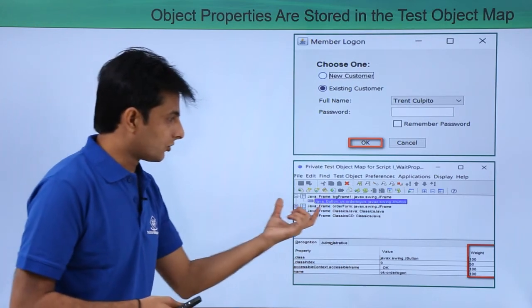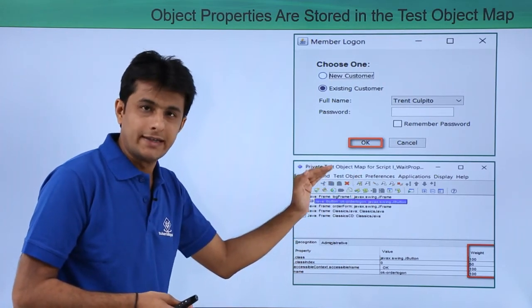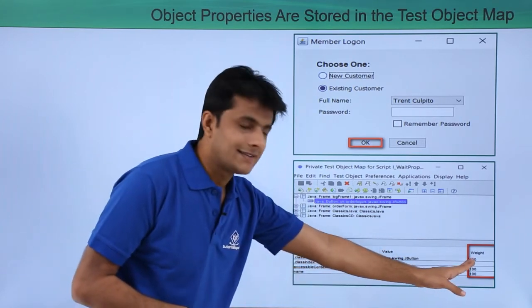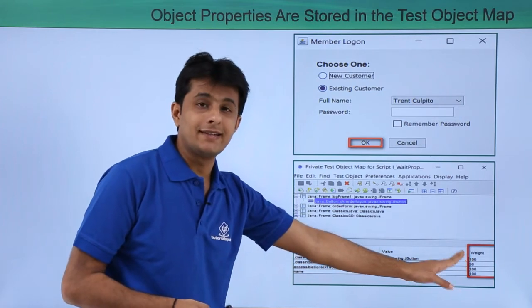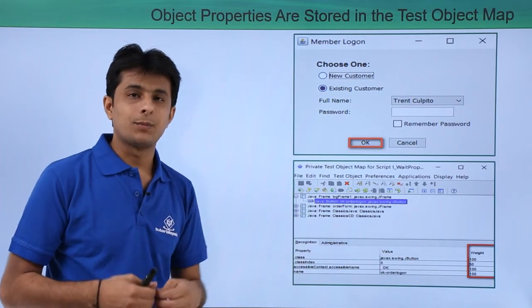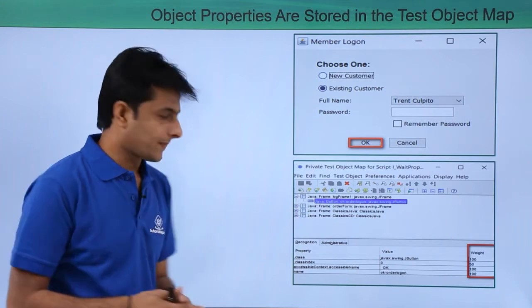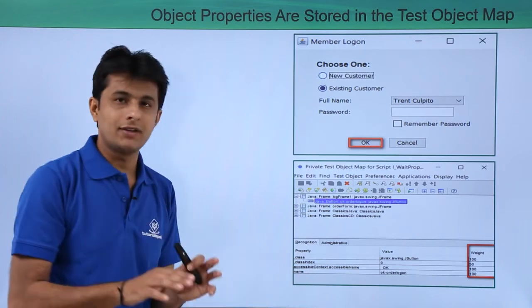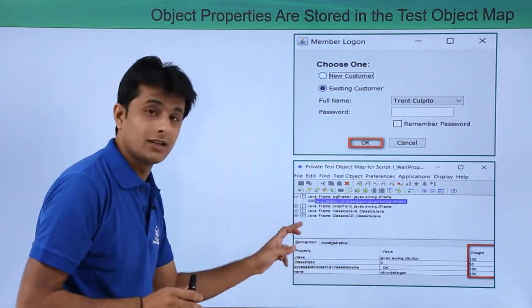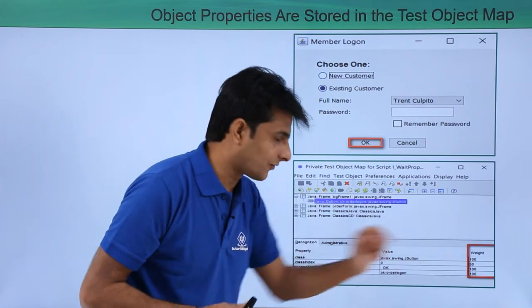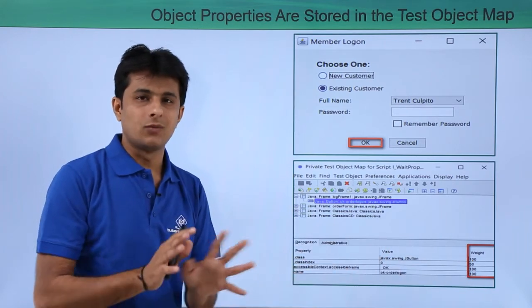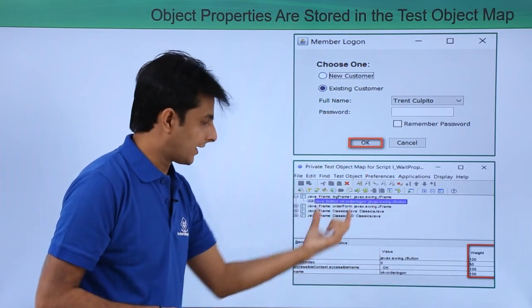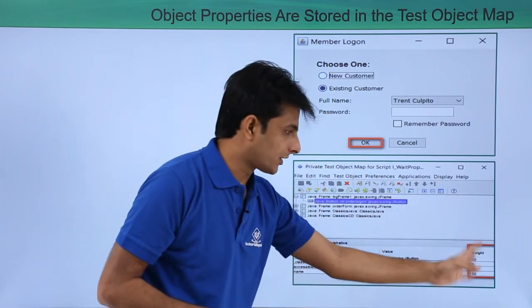This is how it looks like - this is a graphical or picture format. But what happens in real time? This is a test object map with the different hierarchies of object. These are the properties of the object, the values, and at the right hand side extreme corner you can see these are the weightage - weightage are nothing but preference of that particular property. Here you can easily understand that the dot class index is having the lowest preference as compared to the other properties because it's given as 50. If you want you can make it as 70, 80, 90 - whatever you want. For this particular OK button I have these properties values and you can just customize this particular weightage itself. It is easily customizable.